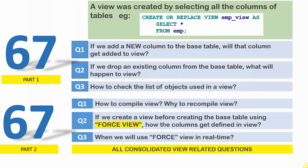The next question is: whenever we create a view using SELECT * FROM a table name, the star is replaced with the columns present at the time of view creation. However, when we create a force view the table itself wouldn't be present — so what would be the behavior, or how will the star be replaced? The third question is what is the real-time scenario where we use a force view. Finally, I will share a compiled list of view-related concepts and questions that developers should know, and I will share the link at the end of the video.